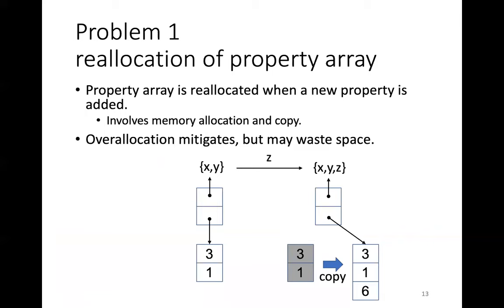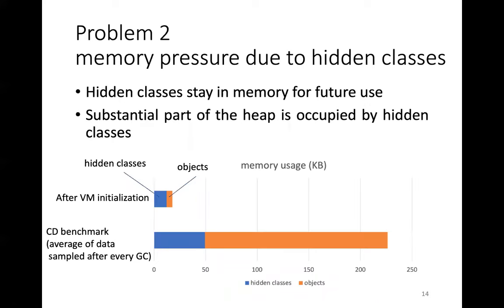One problem with this standard design is that even with hidden classes, the property array is reallocated to extend when the property is added. This involves memory allocation and copying contents. We could over-allocate slots for property arrays to mitigate this problem, but this may waste space.